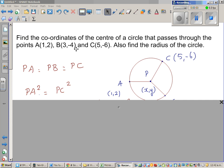Find the coordinates of the center of a circle that passes through the points A(1,2), B(3,-4), and C(5,-6).